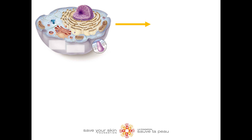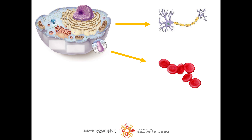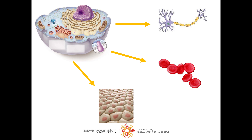For example, we have brain cells, also referred to as neurons, we have red blood cells, also called erythrocytes, and we have skin cells. There are different types of skin cells, such as basal cells, keratinocytes, and melanocytes, just to name a few.